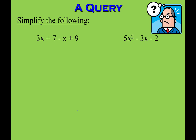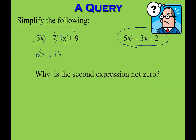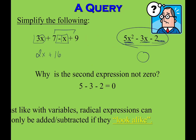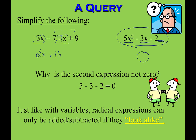When I combine like terms, I can combine terms that have the same variable with the same exponents. So 3 minus 1 gives 2x, and 7 plus 9 is 16. On the other side, the answer is not 0 because these are not like terms — I can't combine an x squared and a single x and a constant. Radicals work the same way: you can only add and subtract like radicals.